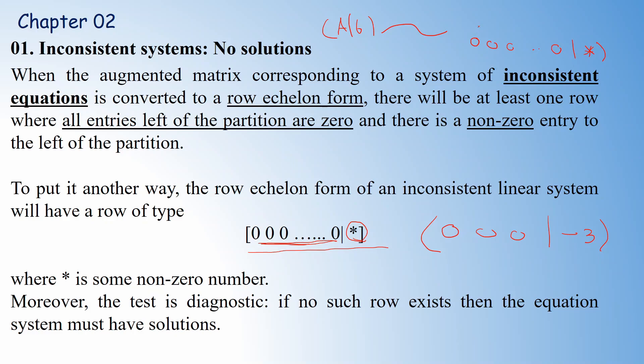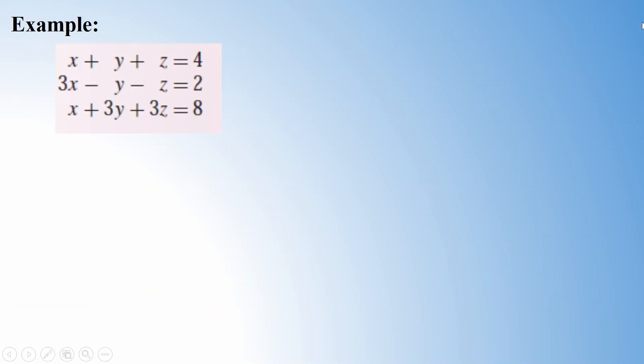If the row echelon form contains at least one such row, you can immediately claim the system does not have a solution. For example, consider the linear system: x + y + z = 4, 3x - y - z = 2, and x + 3y + 2z = 8.